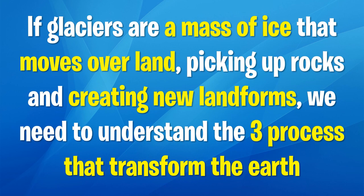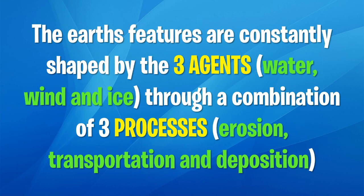Now that that's out of the way, if glaciers are a mass of ice that moves over land, picking up rocks and creating new landforms, we need to understand the three processes that transform the Earth. Earth's features are constantly being shaped by three agents — water, wind, and ice — through a combination of three processes: erosion, transportation, and deposition.